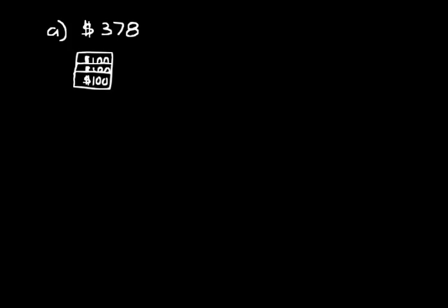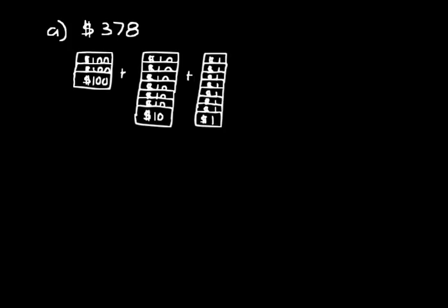So to represent $378 with the appropriate place values, we would need three hundreds. And then you would need seven ten dollar bills because there's a 7 in the tens place. That tells you you need seven ten dollar bills or $70. And then you would need eight one dollar bills. Using numbers to describe this addition, we would say 300 + 70 + 8. And then we can clearly see that the 3 in 378 has a value of 300, the 7 has a value of 70, and the 8 has a value of 8. And all of those equal 378.